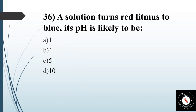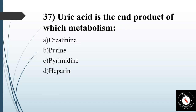Thirty-sixth question. A solution turns red litmus to blue. Its pH is likely to be. Option A: 1. Option B: 4. Option C: 5. Option D: 10. Answer is Option D: 10.